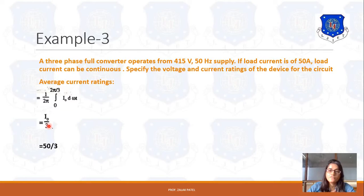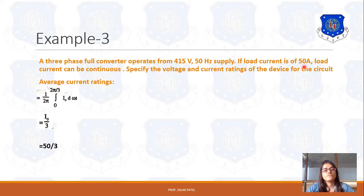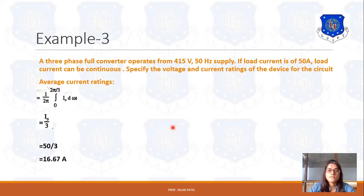If we put the value of load current I0, which is given as 50 ampere, then 50 upon 3 gives us the answer of 16.67 ampere for average current rating.